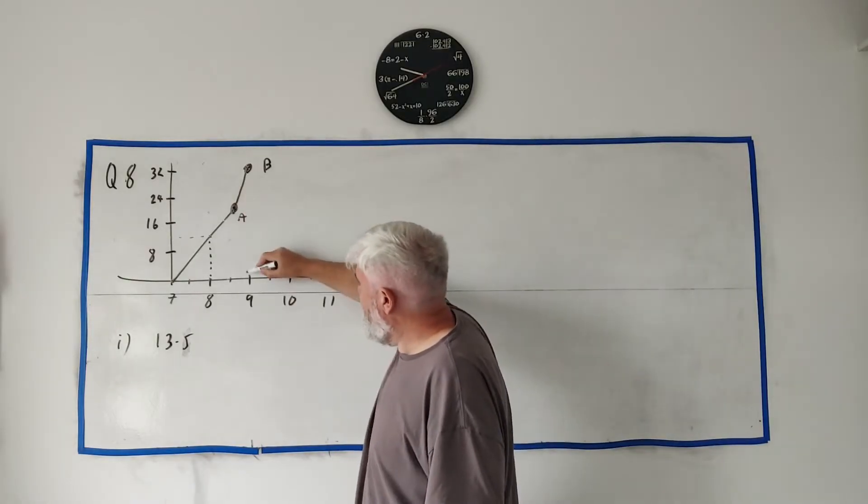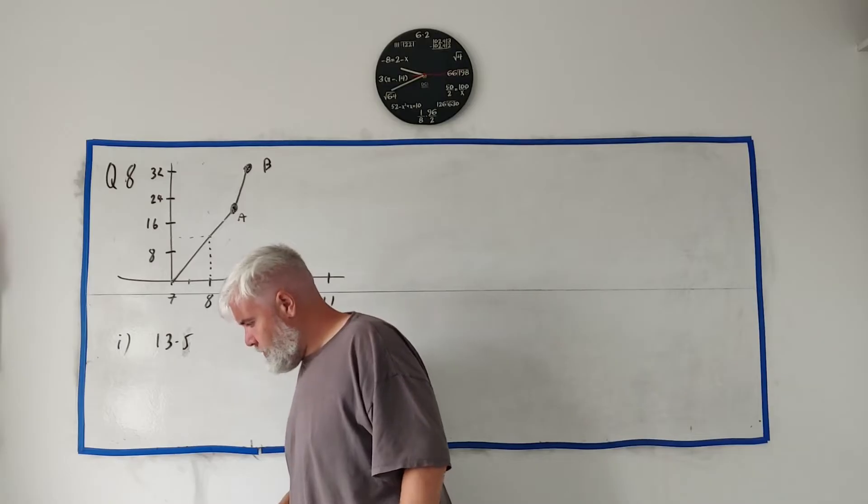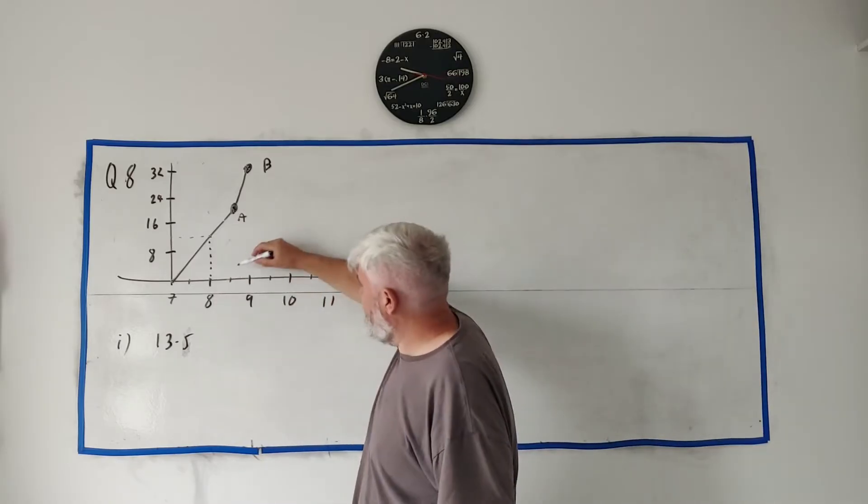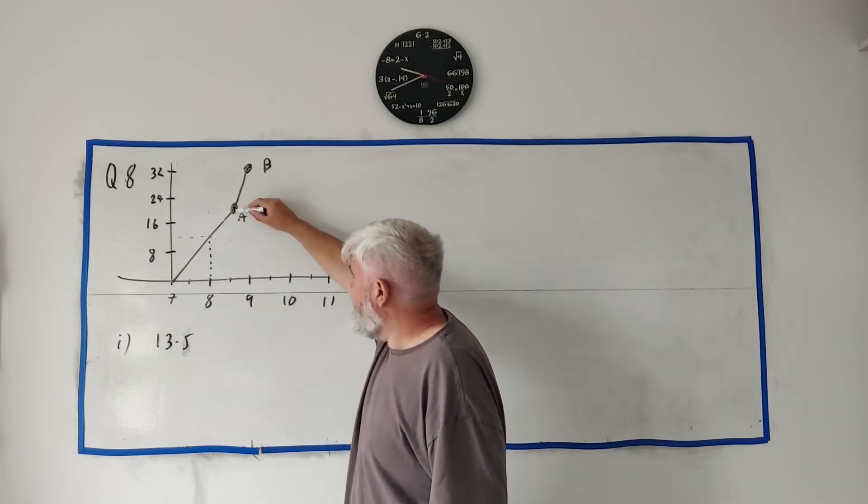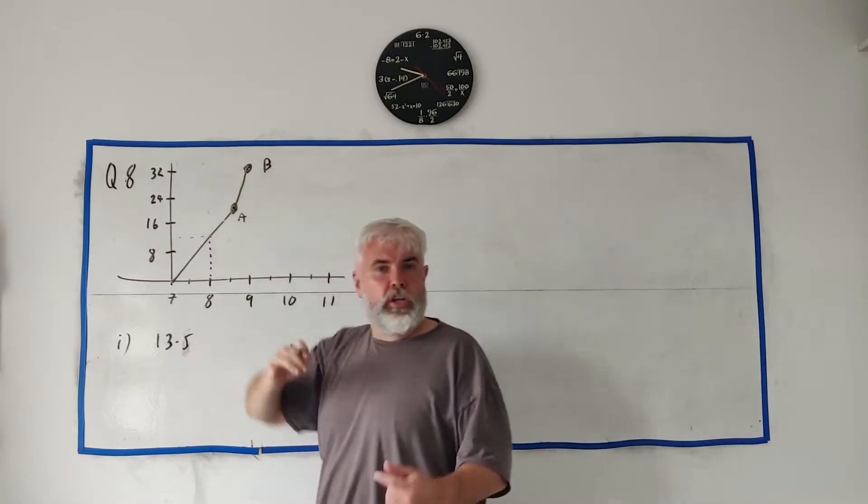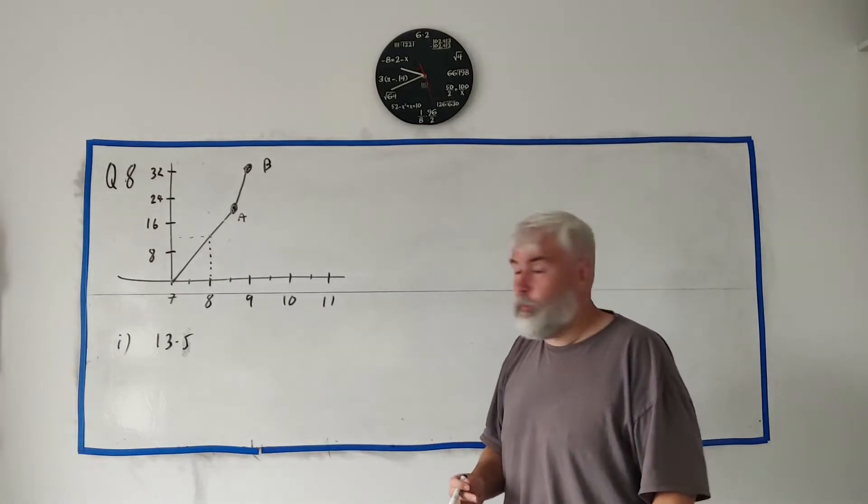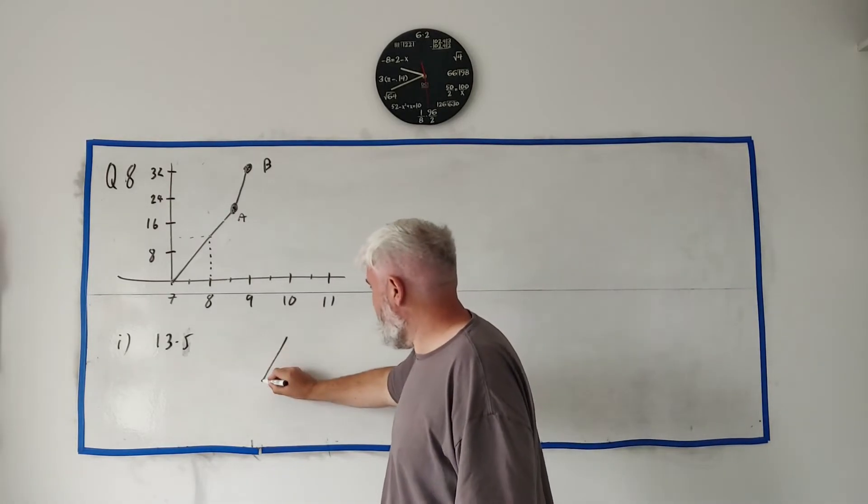Two ways to do it: you can find the point here—these points, I think I wrote them down somewhere—8.5 and 20, and this one's 9 and 32. You could use those points and coordinate geometry and get the equation of a slope. There's a much easier way to do it, or maybe a better way to do it.